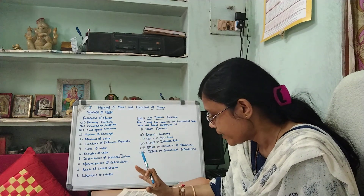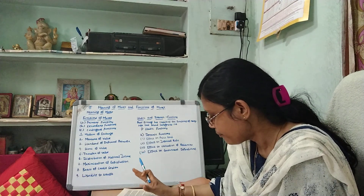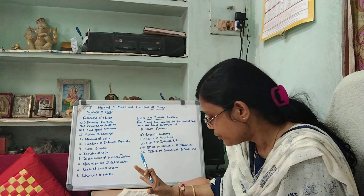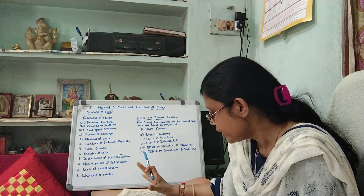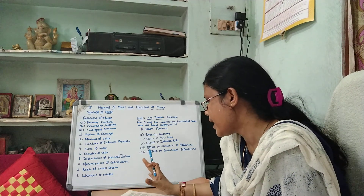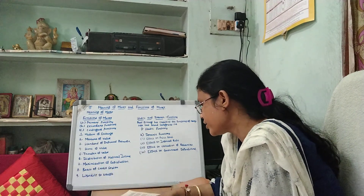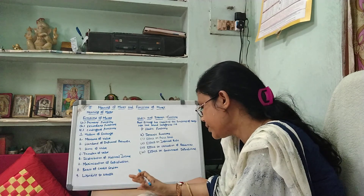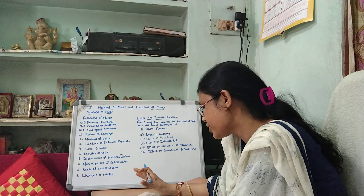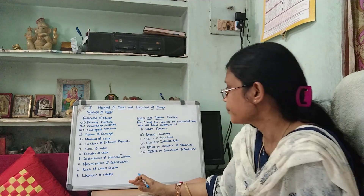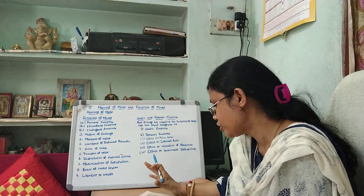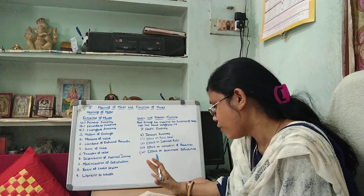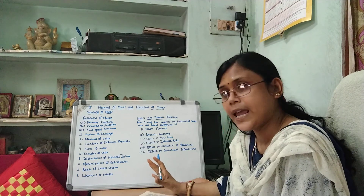Third, standard of deferred payments. When money is generally accepted as a medium of exchange and a unit of value, it naturally becomes the unit in terms of which deferred or future payments are stated. So money not only performs the function of medium of exchange but also facilitates credit transactions. Fourth, store of value. Money, being a unit of value and a generally acceptable means of payment, provides a liquid store of value because it is easy to spend and easy to store. Fifth function is transfer of value. Money also functions as a means of transferring value from one place to another because money is acceptable everywhere.